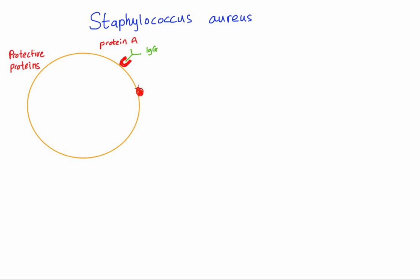The second protective protein is coagulase. We know Staph aureus is coagulase positive. Coagulase causes coagulation — it causes fibrin strands to form around the bacteria, which protect it. This allows Staph aureus to cause abscesses.